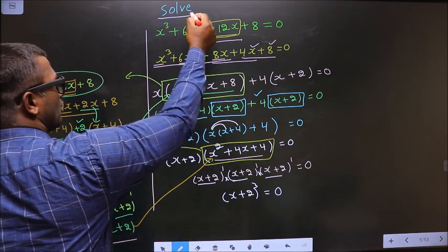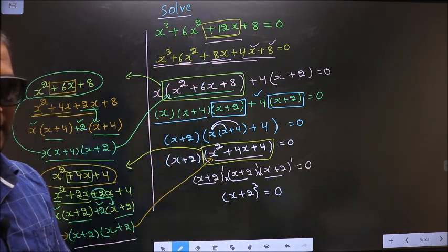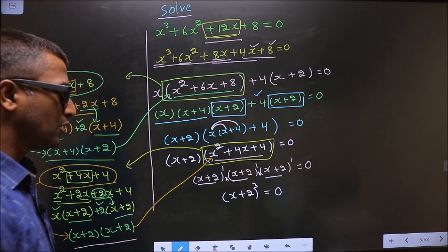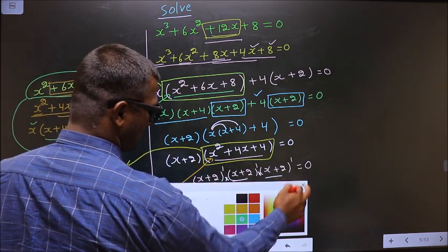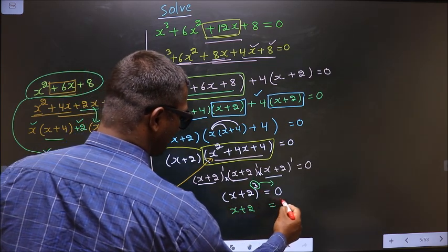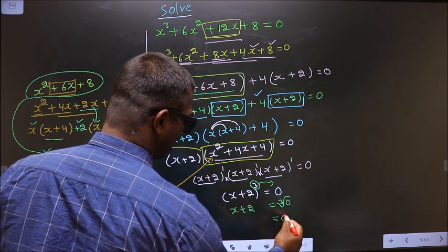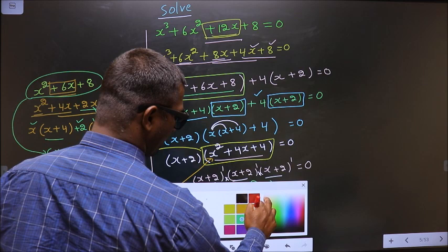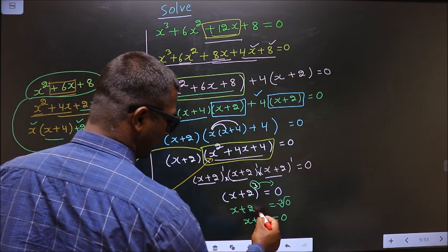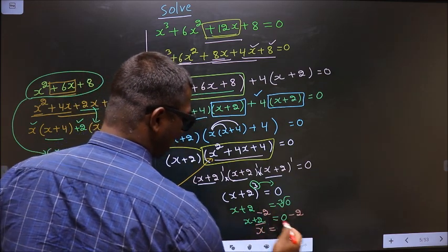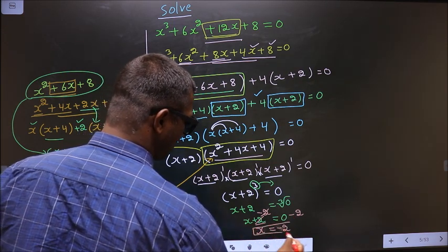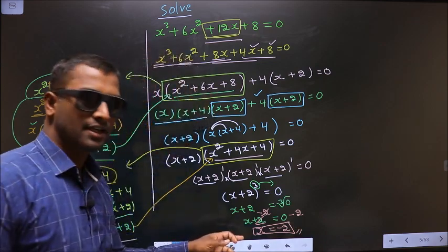They told you to solve, so you should get the value for x. For that, you should make x the subject. First you should shift the cube to the other side — so when you shift cube to the other side, it will become cube root of 0, that is 0. Now to get x, you should remove plus 2. To remove plus 2, you subtract 2 on both sides. So this cancels out here — x equals minus 2. So this is our answer.